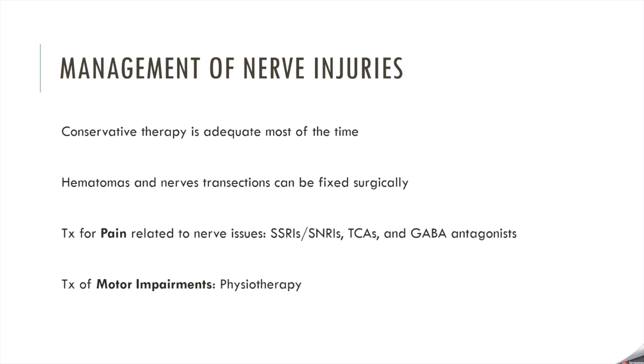For general management of nerve injuries: as noted at the beginning, most are sensory, so conservative therapy is usually adequate, and most will return to function in weeks to months. If there are hematomas or nerve transections, identify and fix them surgically — as we saw with the obturator and pudendal nerves, even at two years post-op you can have significant improvement. For pain associated with neuropathy, management includes SSRIs, SNRIs, TCAs, or GABA antagonists — an example of a GABA antagonist would be baclofen. Motor impairments are slightly rarer, but physiotherapy is recommended to improve motor function.